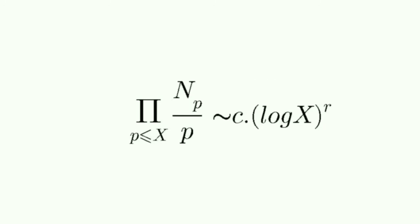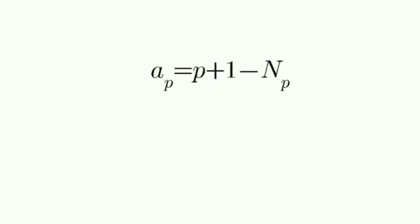In the modern version of the conjecture the L series is introduced. So what is it? Define a term ap which is the difference between the expected number of points and the real number of points on E mod p.